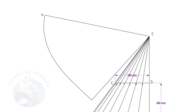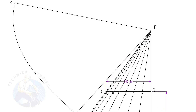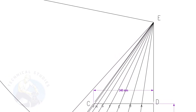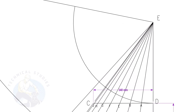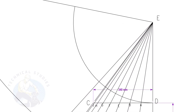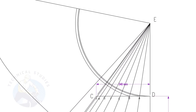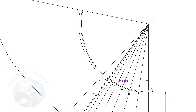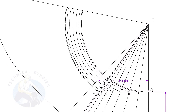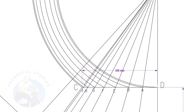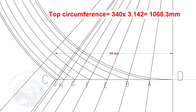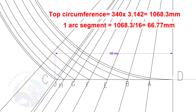Let us draw the top portion of the cone. The procedure is similar to that of the bottom side. Draw arcs ED, EA, EB, etc. Calculate the circumference of the top side and divide it by 16. The top side diameter is 340 mm. The length of one arc segment is 66.77 mm.